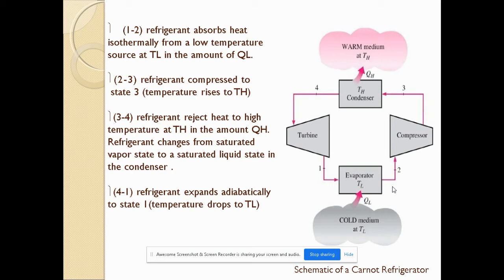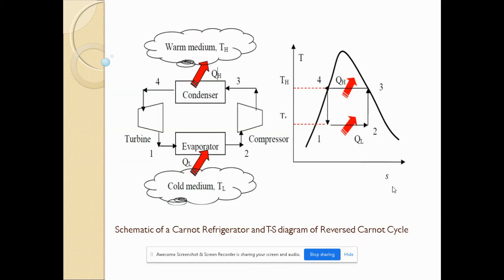One important point to note here: the refrigerant changes from saturated vapor state to saturated liquid state. Process 4 to 1 is an expansion process where the temperature drops back to TL. These four processes form the basic cycle of the Carnot refrigerator.